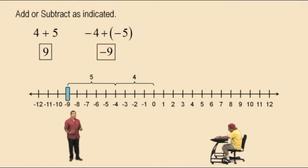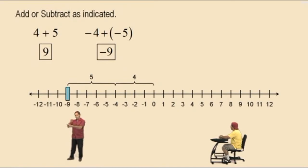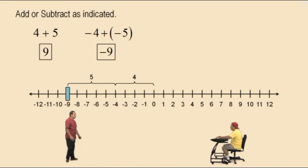Some of you were taught: when you add two numbers that are negative, you add the magnitudes together and put a negative in front. In other words, you do 4 plus 5 and put a negative in front, and you get negative 9. We're just showing it on a number line.